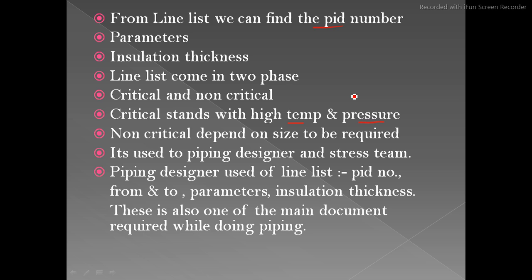The line list is used by the piping designer and the stress team. A piping designer uses the line list for getting the P&ID number, from and to connections, parameters, and insulation thickness. This is also one of the main documents required while doing piping modeling.